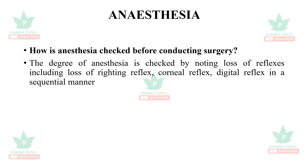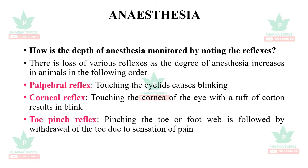How is anesthesia checked before conducting surgery in laboratory animals? The degree of anesthesia is checked by noting the loss of reflexes, which includes loss of righting reflex, corneal reflex, and digital reflex in a sequential manner. The depth of anesthesia is monitored by noting that reflexes are lost as the degree of anesthesia increases.